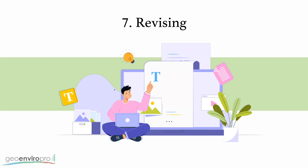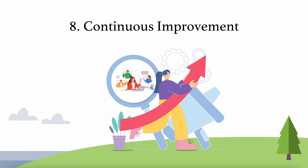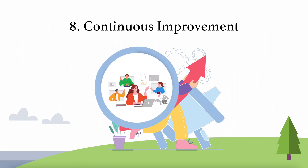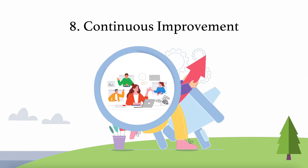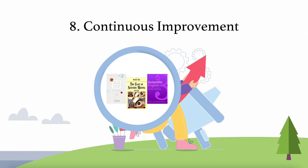Step 7: Revising. Focus on revising the report flow and structure first, and then the paragraphs and language to improve the report. Step 8: Continuous improvement. Commit to continuously honing your writing skills through learning from peers and utilizing external resources.